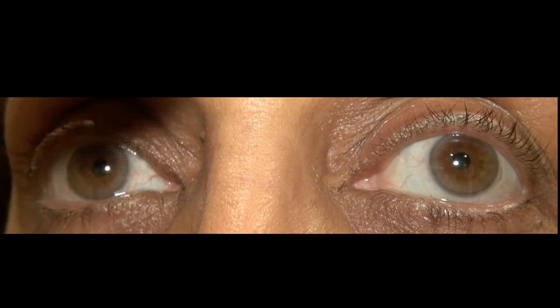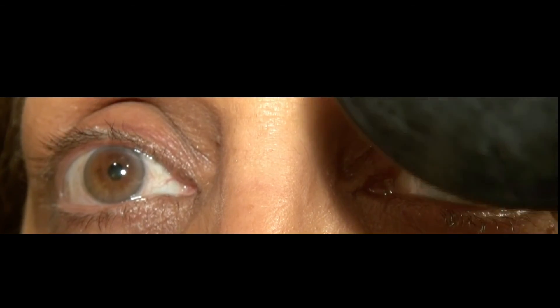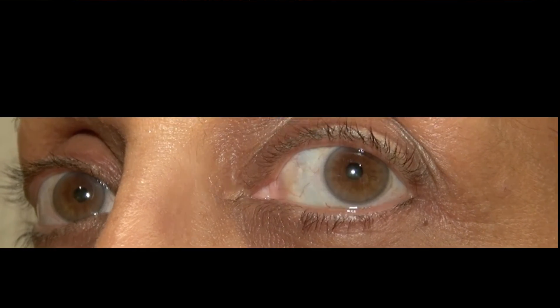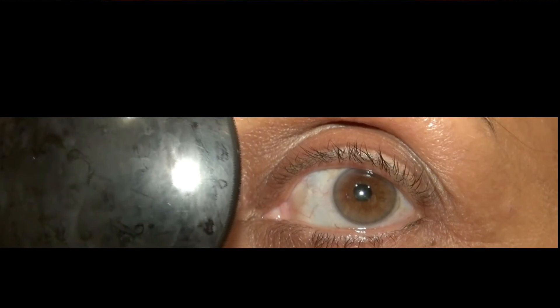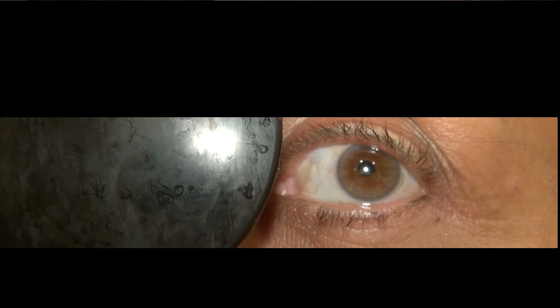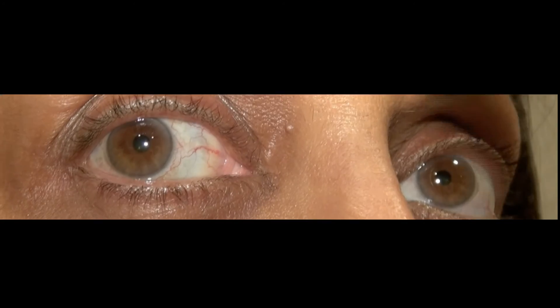In straight ahead gaze, the left eye is higher than the right eye, as you can see by the down shoot of the left eye when the right eye is covered. In left gaze, the left eye is barely higher than the right eye. And in right gaze, the left eye is much higher than the right eye.